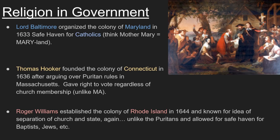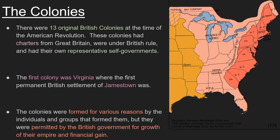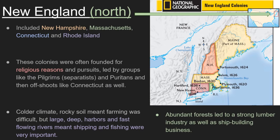There were 13 original British colonies at the time of the American Revolution. These colonies had charters from Great Britain, were under British rule, and had their own representative self-governance. The first colony was Virginia, where the first permanent settlement of Jamestown was. The colonies were formed for various reasons, but were permitted by the British government for growth of the empire and financial gain. Great Britain wanted to claim land, and it's hard to claim land without people occupying it — having British colonies was how they went about growing the empire.